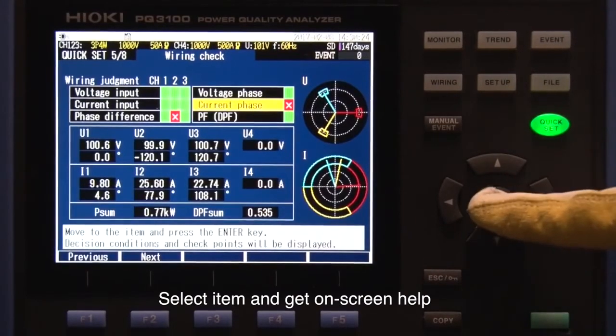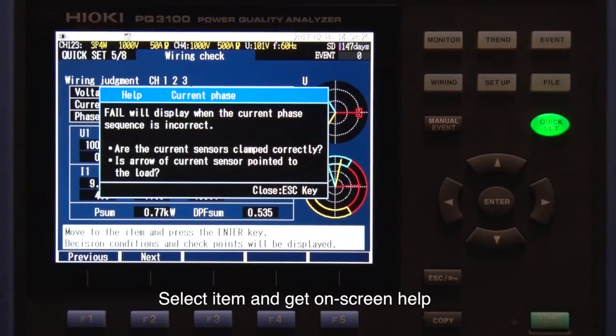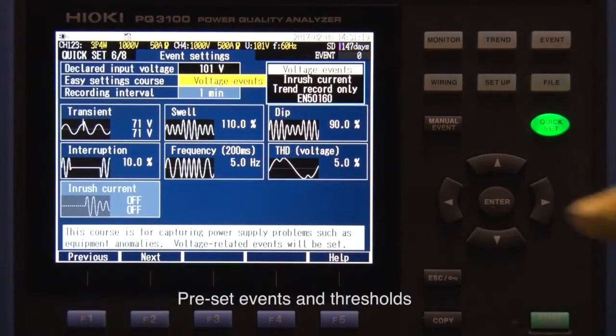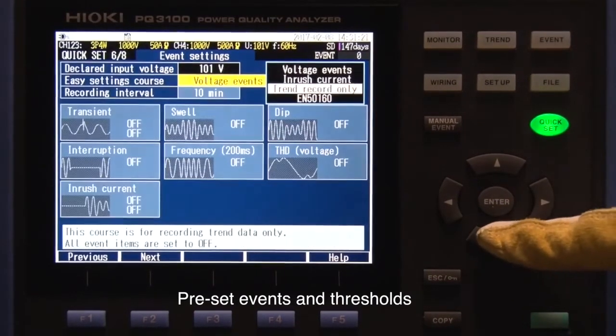Select the items you want to adjust and get tips on how to fix the problems. Within the Quick Set function under easy settings, you can choose from several different measurement scenarios.